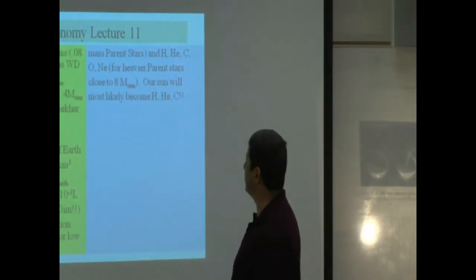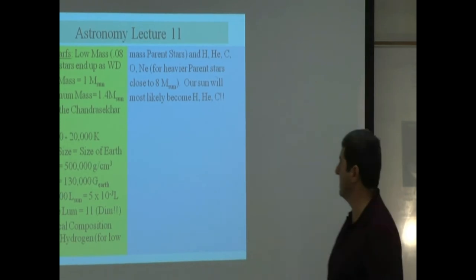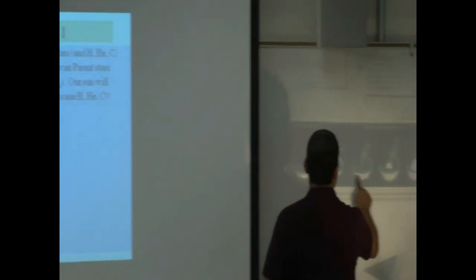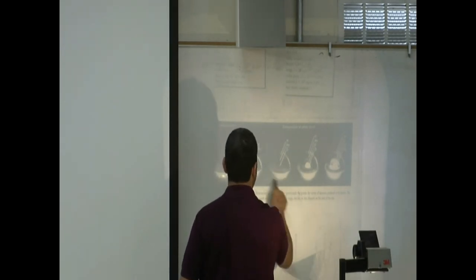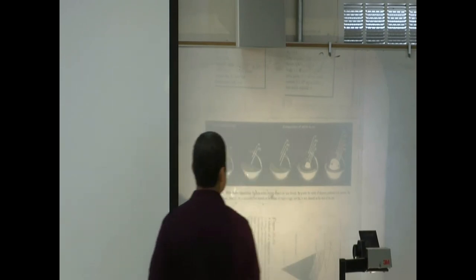Our sun, when it dies, it will most likely end up as somewhere in the middle. When it dies and ends up as a white dwarf, it's going to look like this. It's going to be the size of the earth. It's going to have hydrogen, helium, and carbon in it.